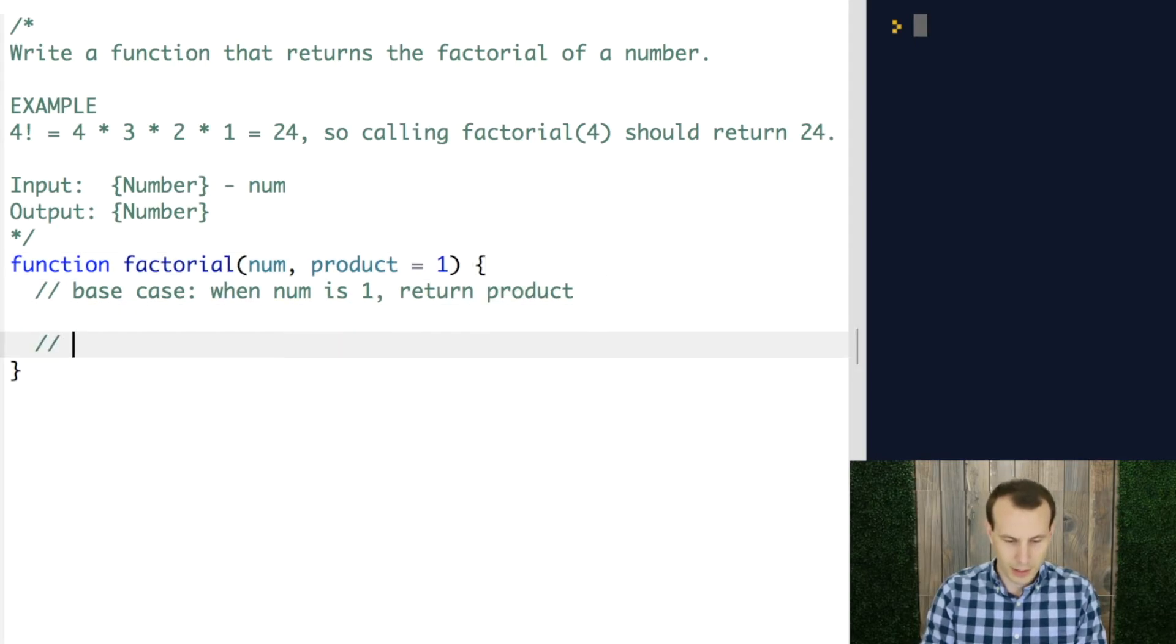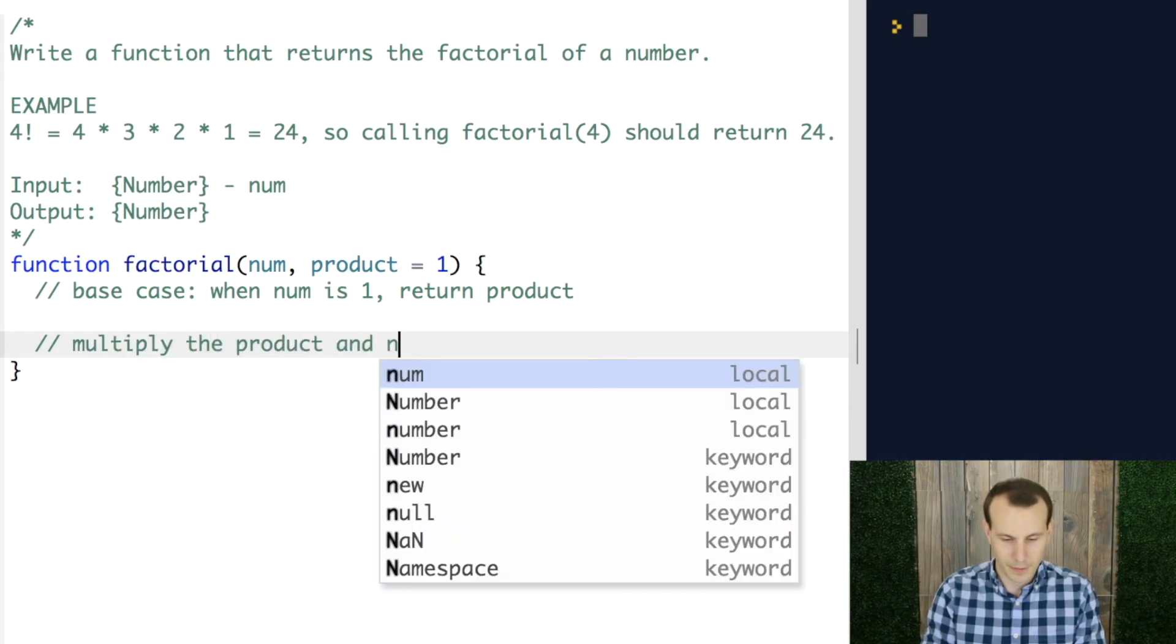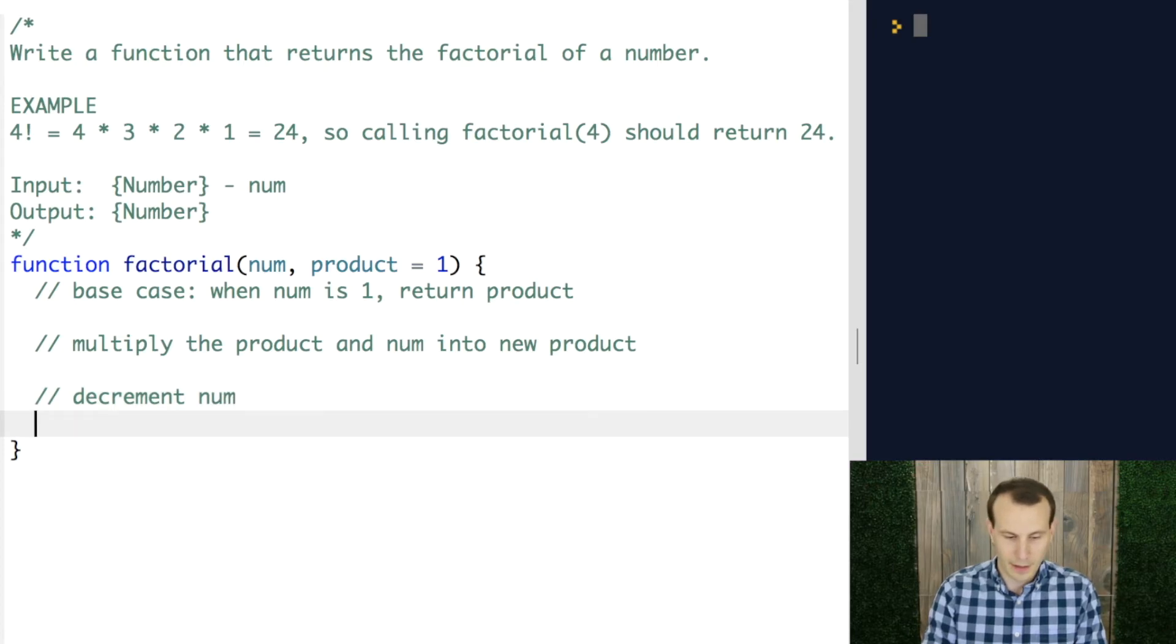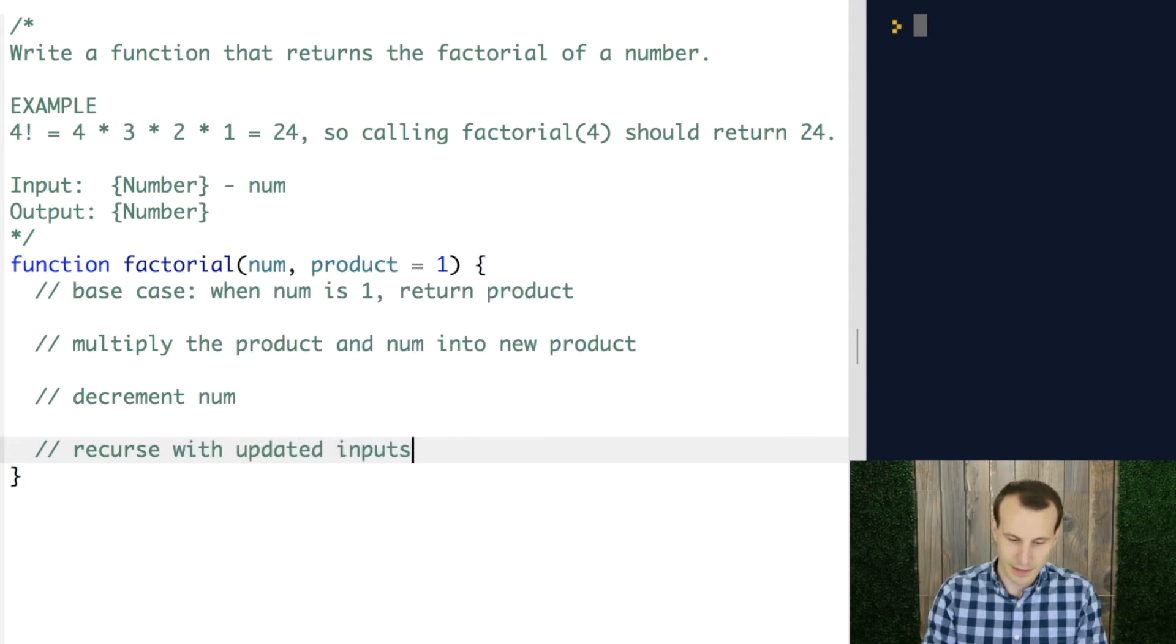And then, we're going to want to multiply the product and the number to make a new product. It's a new product. We're also going to want to decrement the number input. And then finally, we make our recursive call with the updated inputs. And that's it.